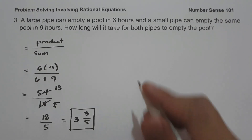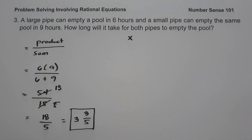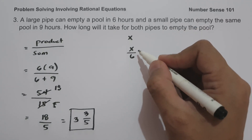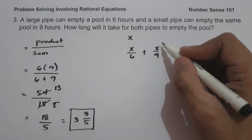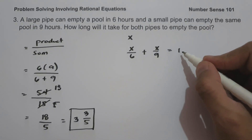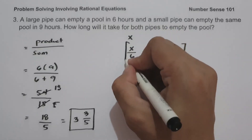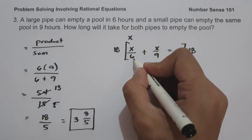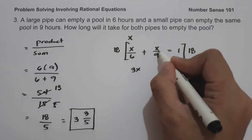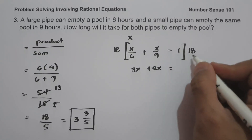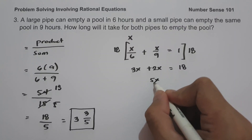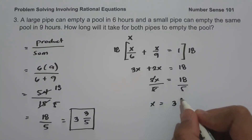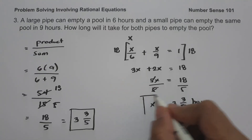For the second solution, let us represent x as the number of hours for both pipes to empty the pool. We have x over 6, the part emptied by the large pipe, plus x over 9, the part emptied by the small pipe, equals 1 for the entire pool. Multiplying the whole equation by the LCM of 6 and 9, which is 18: 18x divided by 6 is 3x, and 18x divided by 9 is 2x, and 1 times 18 is 18. So 3x plus 2x equals 5x equals 18. Dividing both sides by 5, x equals 18 over 5, that is 3 and 3 over 5 hours. We get the same answer with both methods.